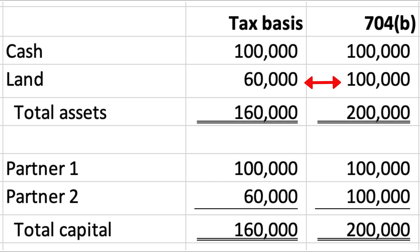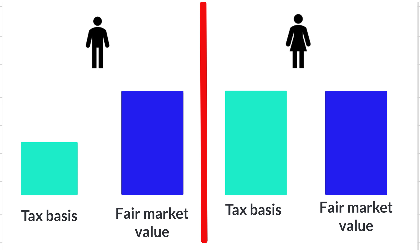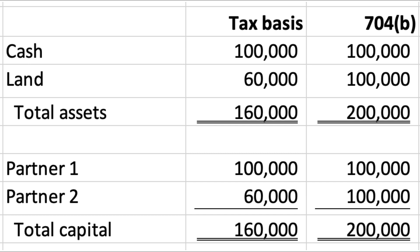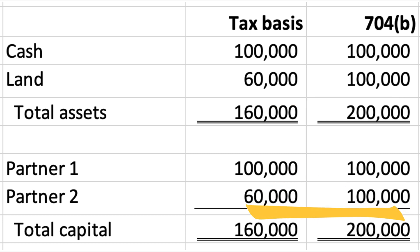704C is concerned with the difference between the two balance sheets and resolving this difference. It requires that any allocation of tax profit or loss should be done in a way that reduces the difference between a partner's share of tax basis in the asset and the partner's share of fair market value in the asset that exists at the time of the contribution. In our example, that difference is $40,000, and the entire $40,000 of difference is assigned to Partner 2, the contributing partner.